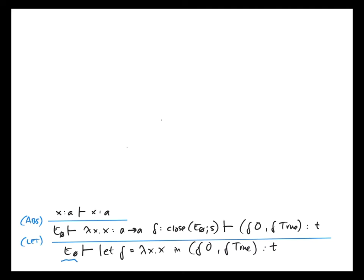How do we close this type a to a? We close a type by putting a universal quantifier for every type variable that's not free in the type environment. The type environment e is empty, so this is fairly easy. This is just for all a, a to a, so that's the type that f should have when we type check the pair.